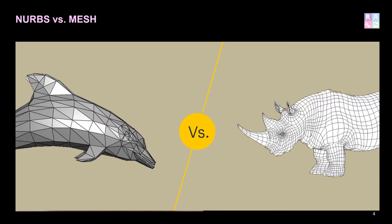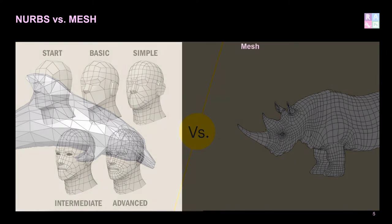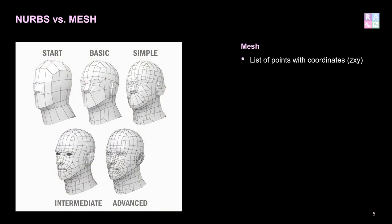The biggest key concept to understand is that Rhino is a NURBS-based modelling software, as well as mesh. Its real power is NURBS-based modelling. With mesh modelling, meshes are essentially a list of points made up of vertices, edges, and faces. To give an example using this head model, the intersections where lines meet are points, the vertices are the lines connecting the points, edges are the edges of a surface, and the faces are the larger surfaces on the mesh.